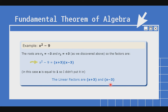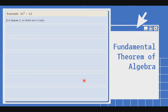The linear factors are x plus 3 and x minus 3. Pag sinabi nating linear factors, ibig sabihin, ang pinakamataas na exponent ng factor ay dapat 1 lang. In this case, kapag wala tayong nakikitang exponent, ibig sabihin 1 ang kanyang exponent.